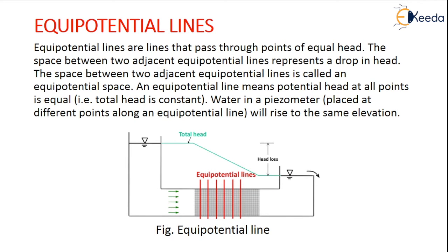Next, coming to the topic equipotential lines. What do you mean by equipotential lines? These are the lines that pass through points of equal head. All the points will have equal head. So the space between two adjacent equipotential lines will represent the drop in head.